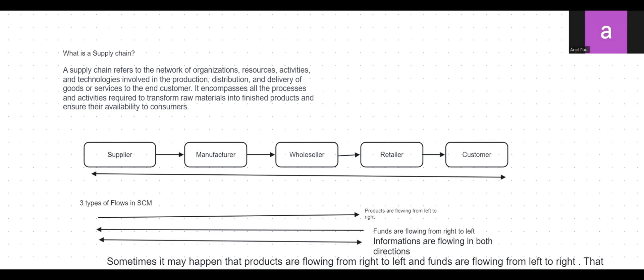A supply chain refers to the network of organizations, resources, activities, and technologies involved in the production, distribution, and delivery of goods or services to the end customers. It encompasses all the processes and activities required to transform raw materials into finished products and ensure their availability to consumers.